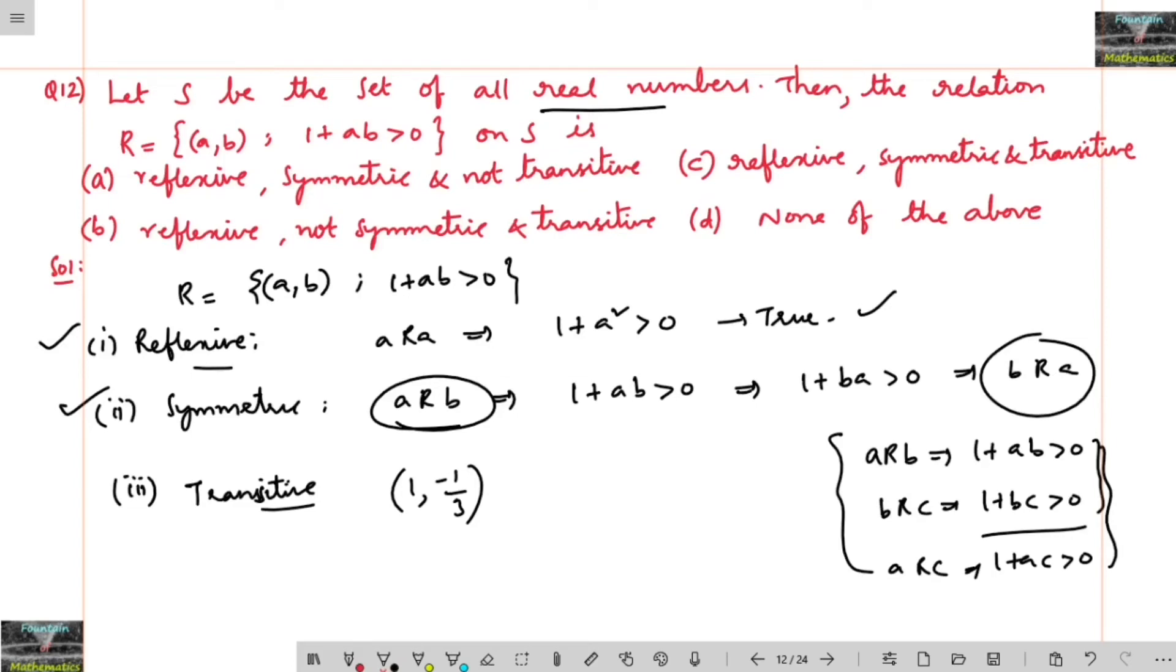1 comma minus 1 by 3, which implies that 1 plus 1 into minus 1 by 3. So this is 1 minus 1 by 3, which is positive only. 3 minus 1, 2 upon 3. 2 upon 3 is positive.